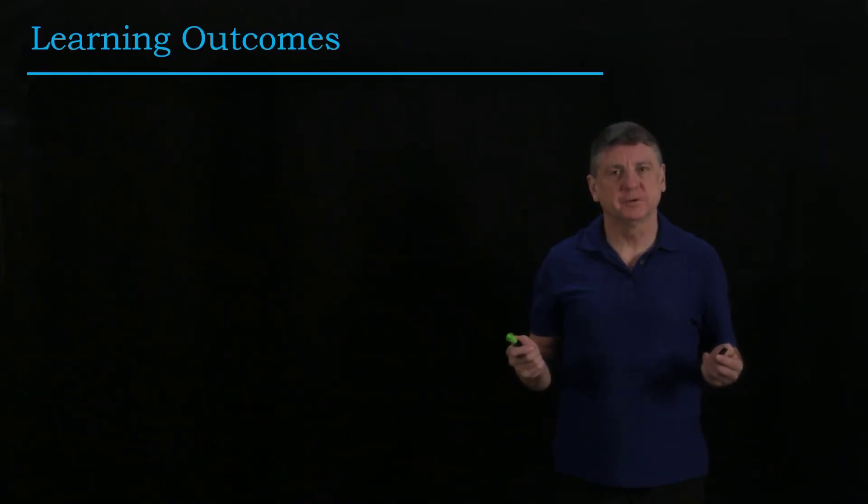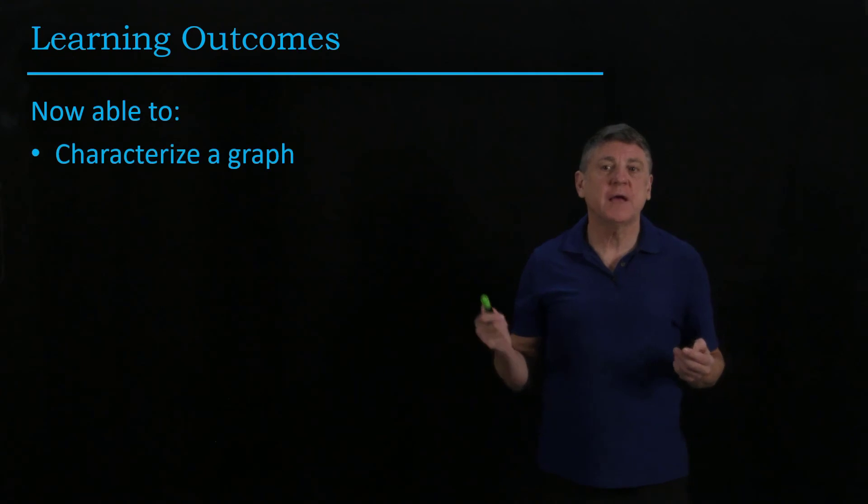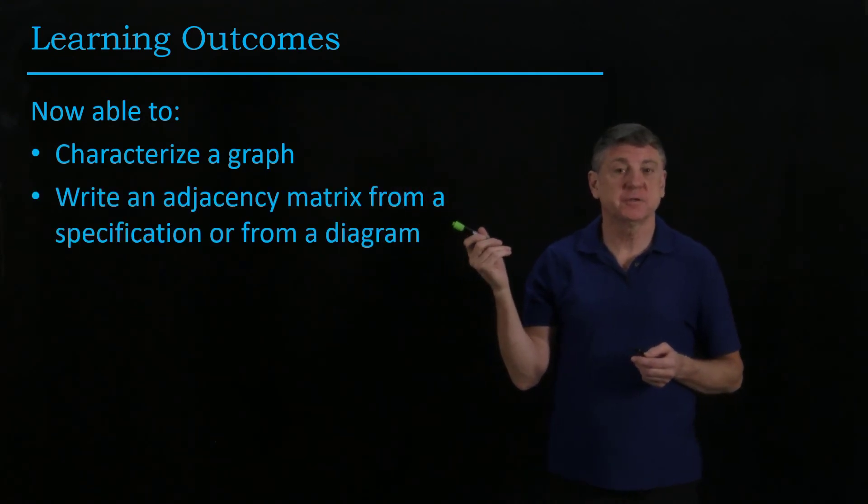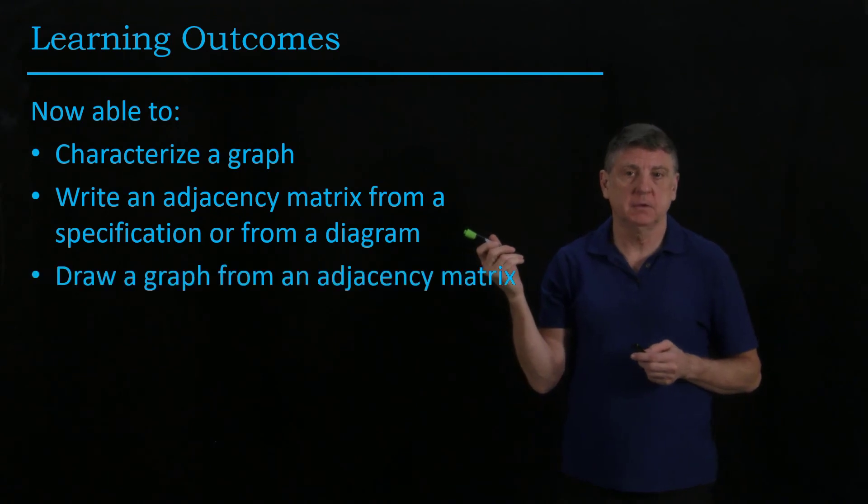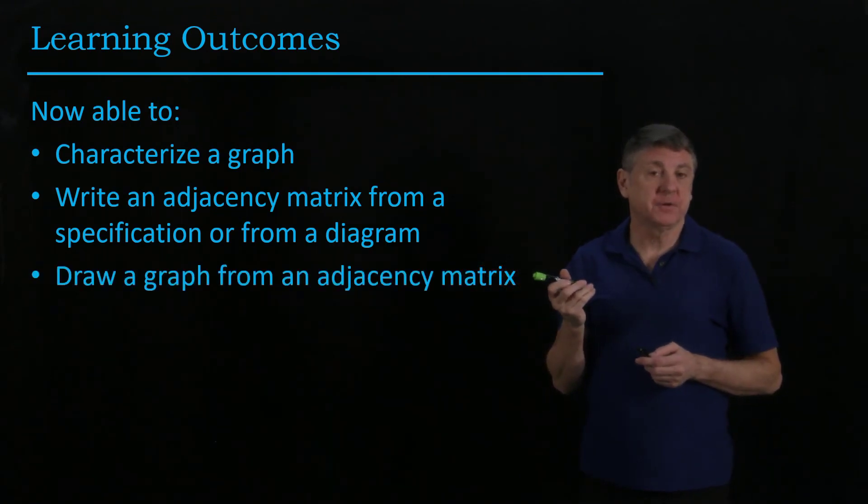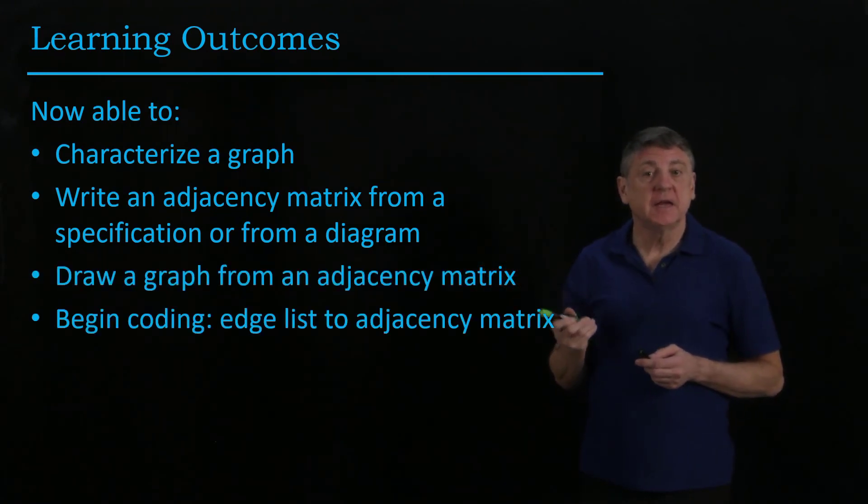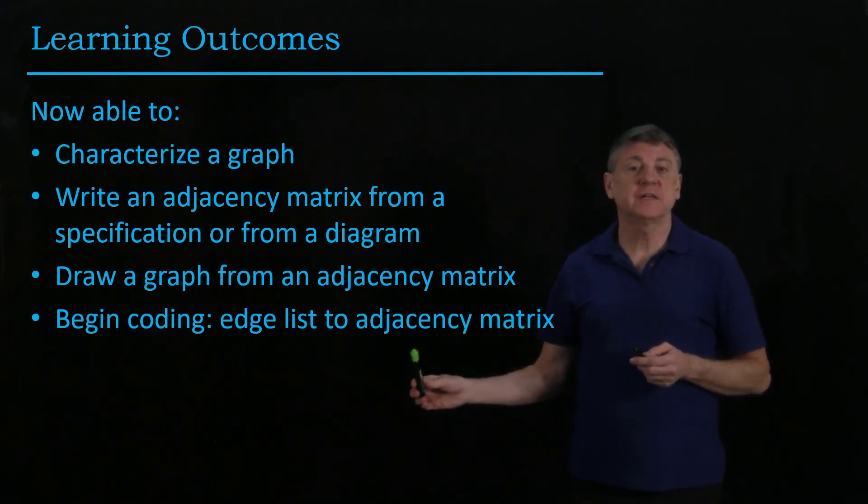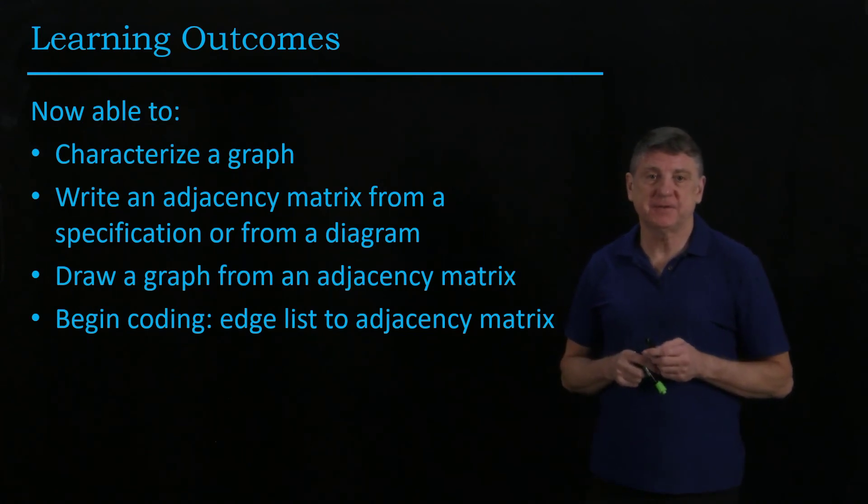Let's summarize what we learned in these lessons. We're now able to characterize a graph. We can write an adjacency matrix from a specification or from a diagram. We can draw a graph from an adjacency matrix. And if we wish, we can begin coding, and we could take an edge list, and we could transform that into an adjacency matrix.